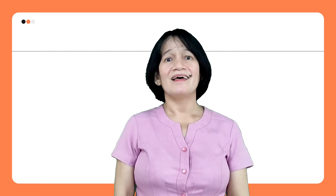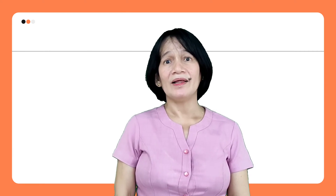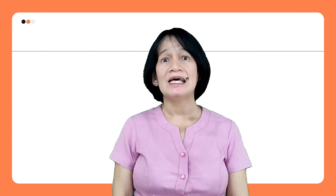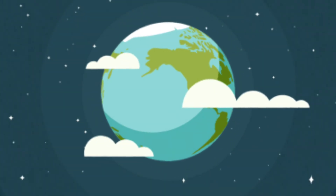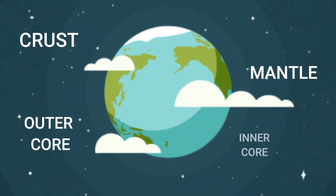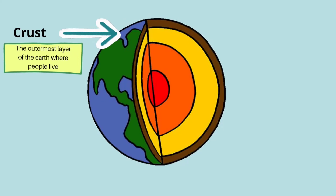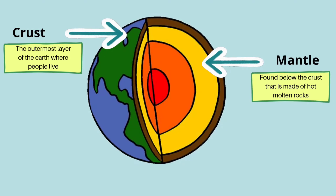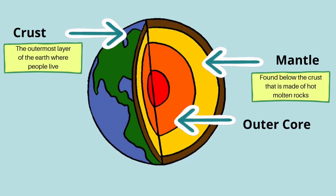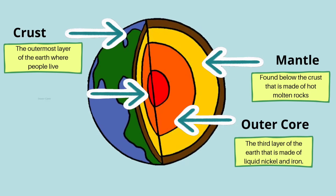Let us use our own model to identify and pinpoint the different parts of the fault. Now let us have a short review about the three layers of the Earth. The Earth is made of different layers, namely: crust, mantle, outer core, and inner core. The crust is the outermost layer of the Earth where people live. The mantle is just below the crust and is made of hot molten rocks. The outer core is the third layer and is made of liquid nickel and iron. The deepest layer is the solid inner core.